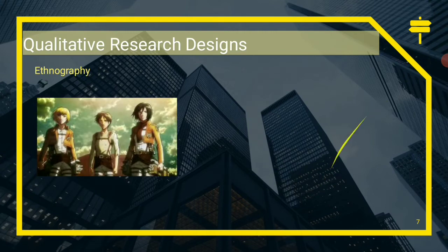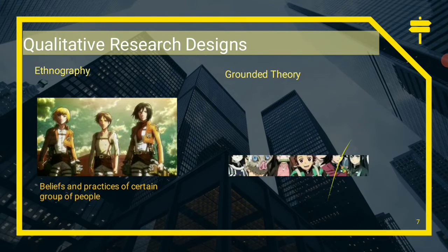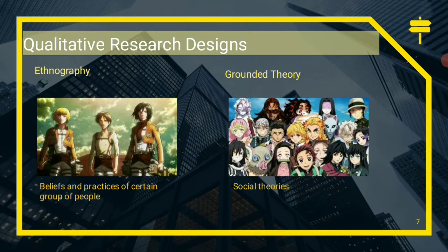Ethnography is utilized when we want to understand the beliefs or practices of a certain group of people — this research design is best for understanding these. For grounded theory, if we want to prove or disprove certain social theories, then this research design is best suited for that purpose.